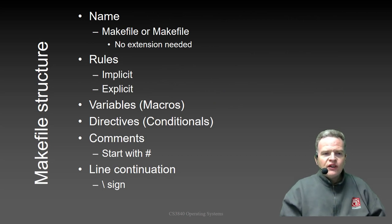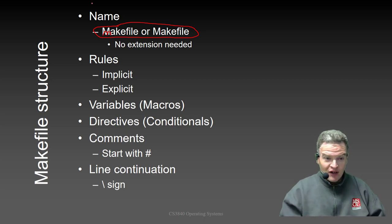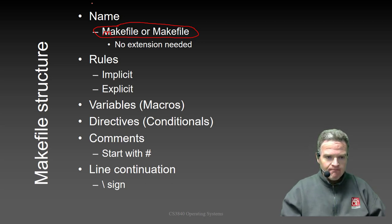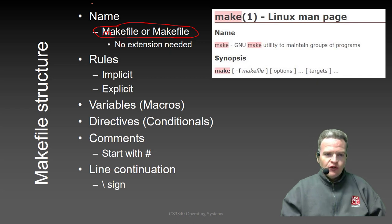Makefiles really consist of several different parts. The first thing is the name of the file. The convention tends to be makefile — either capital or lowercase. There's no extension generally used with Makefiles. The reason is that the tool we use, called make, looks for this particular file.